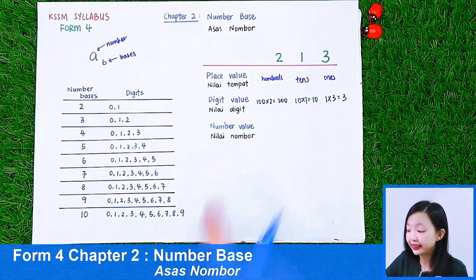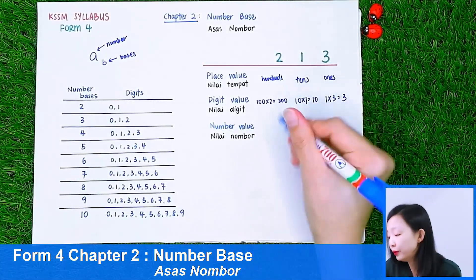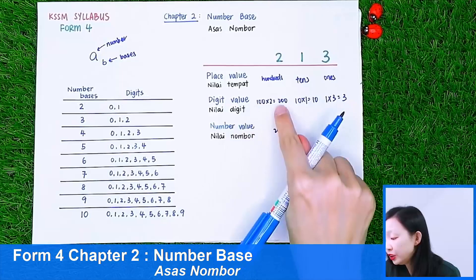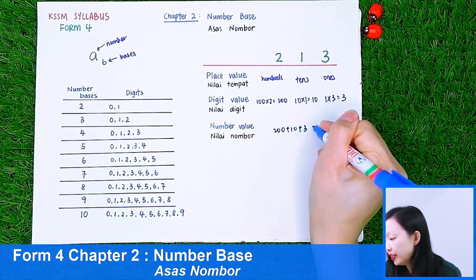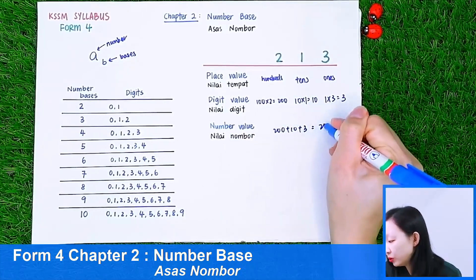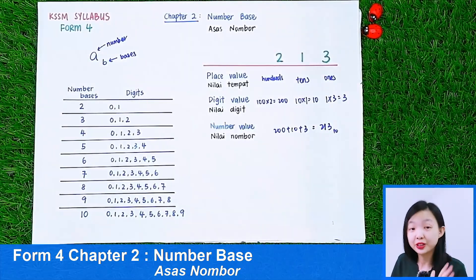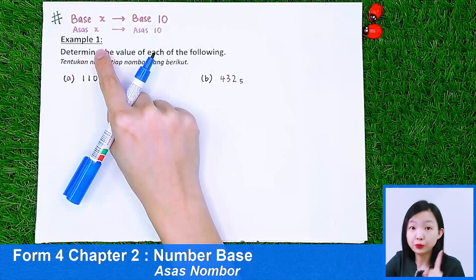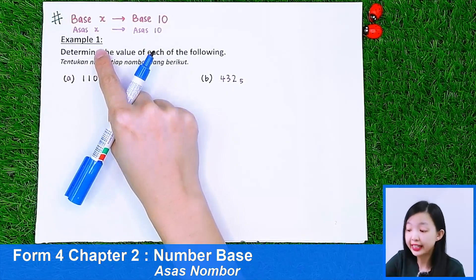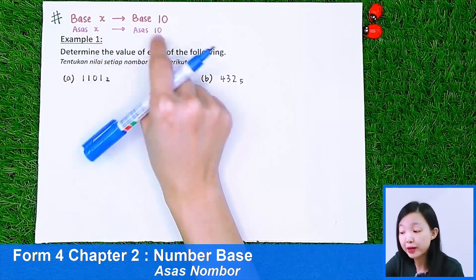Then the last part is the number value. We add all the digit values: 200 plus 10 plus 3, so it is 213 in base 10. Let us see how we can change different number bases to base 10 — this is one of our learning tasks. How can we change different bases to base 10? For example, from base 2 to base 10, from base 5 to base 10, or base 9 to base 10.